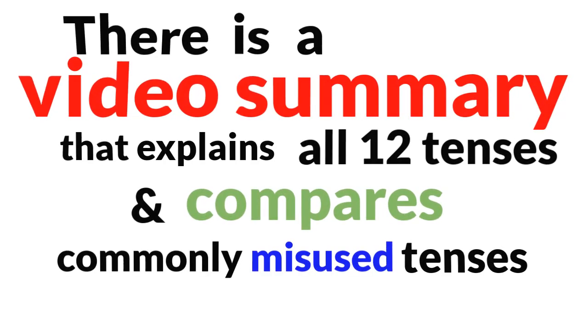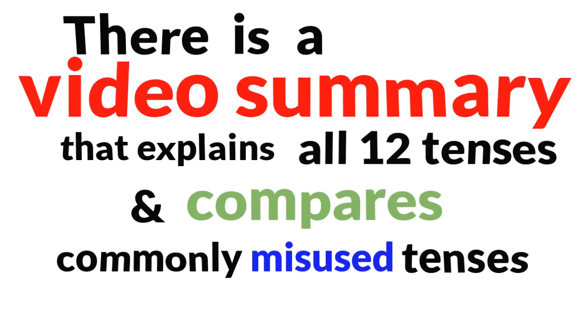It's not just the ebook — it has a video summary as well. I've made a video where I've basically given you a video summary of the book, explaining all 12 tenses in the active and passive voice. I've also compared some tenses that are often misused, like simple past versus present perfect, or past perfect — for example, 'I have bought a car,' 'I bought a car,' 'I had bought a car.'